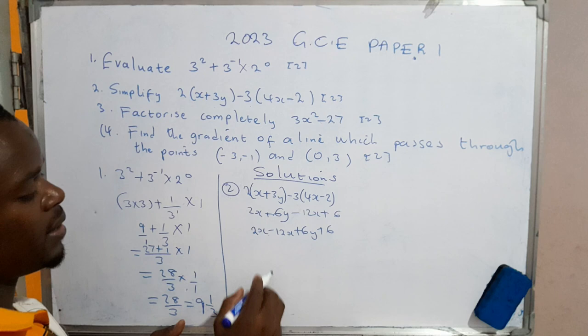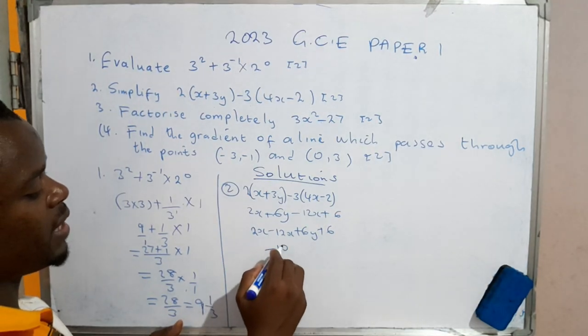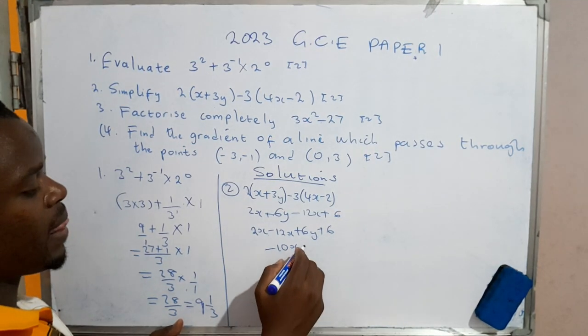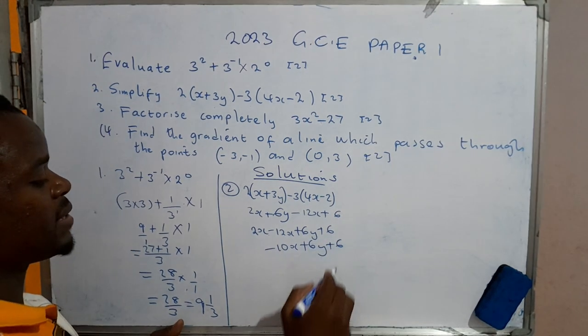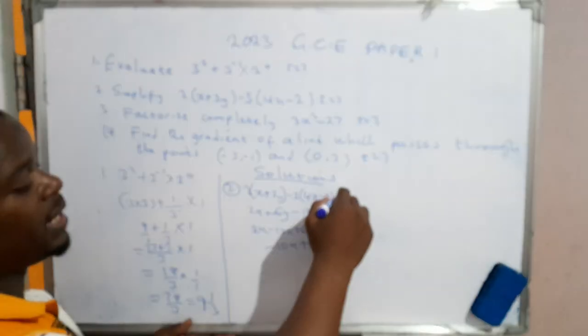From here we can collect the like terms: 2x - 12x + 6y + 6y + 6. This gives us -10x + 12y + 6, and we are done.